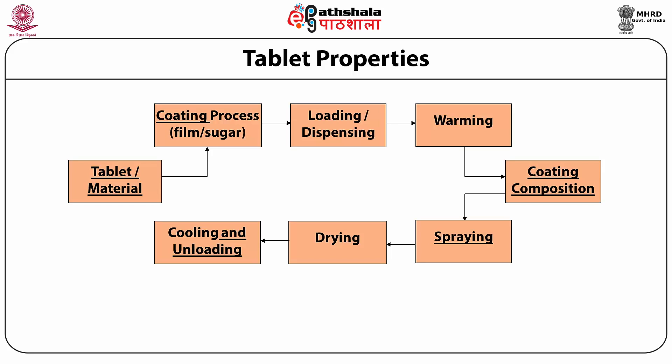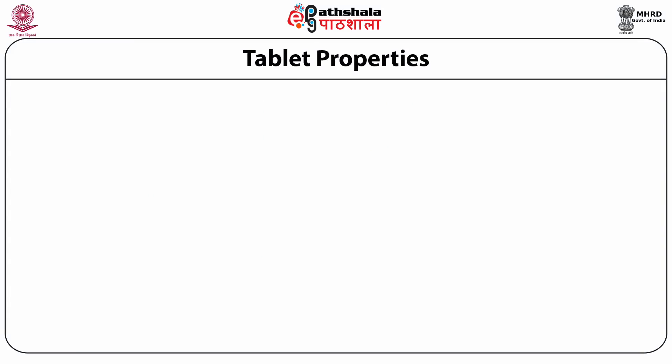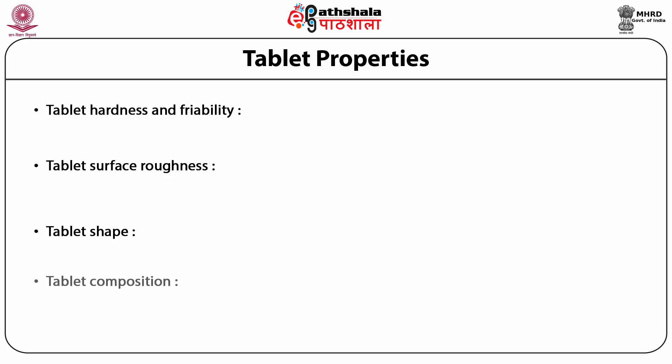Tablets which are to be coated play an important role in the coating process. The parameters of the tablet which affect the coating process include tablet hardness and friability, tablet surface roughness, tablet shape, and tablet composition. Let us discuss these factors one by one.